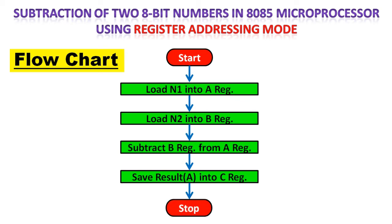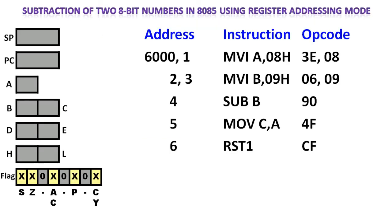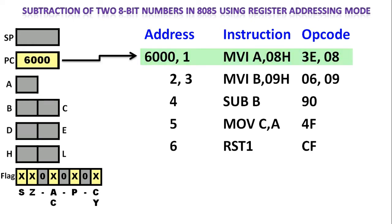Now let us see how to implement this flowchart into its equivalent assembly program. This is the assembly language program for subtraction. Initially the program counter will be pointed to address 6000H. Due to the instruction MVI A, 08, the accumulator will be loaded with the value 08.